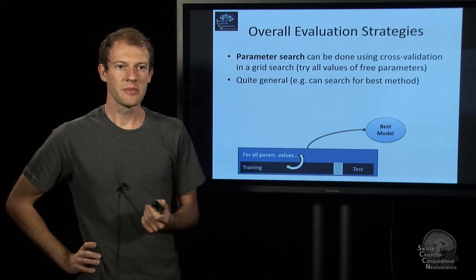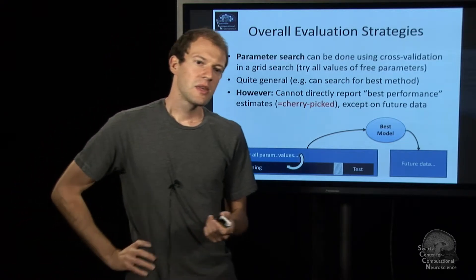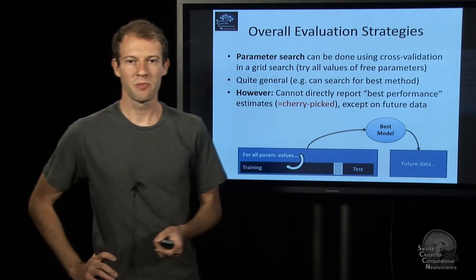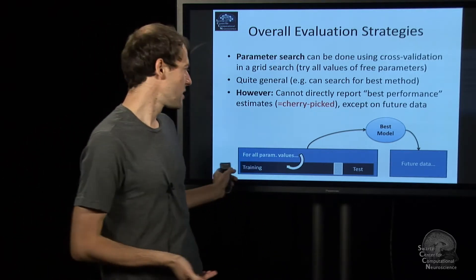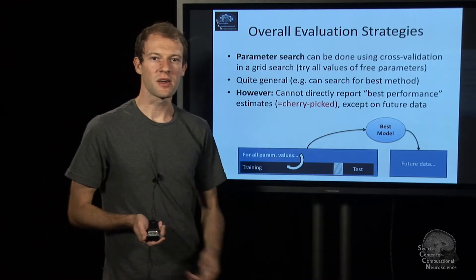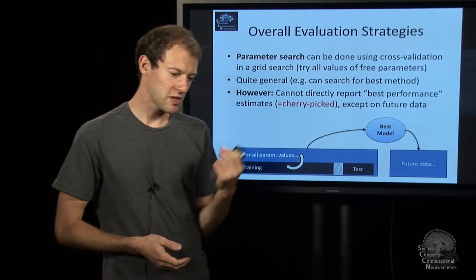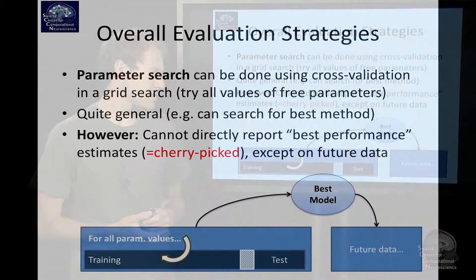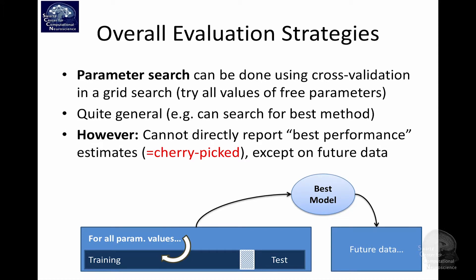And there is only one problem. There are some numbers associated with this best model, and that is how well it worked. But if you report these numbers in a paper, that would be cherry-picking. You've systematically picked the best model that you could find. That's basically scientifically flawed. What you have to do is you have to evaluate that model on some future data and take the loss on that data. And that's the thing that can be reported.